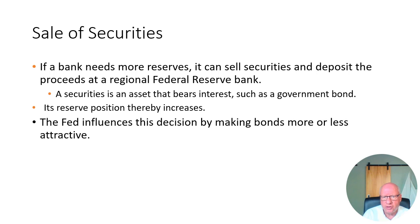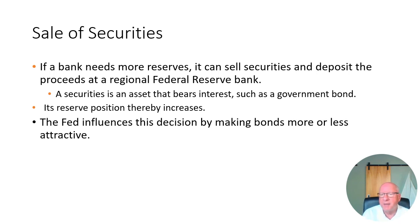Banks maintain liquidity by holding a large portfolio of securities. If a bank is running short of reserves because it made too many loans but has several million dollars in securities, it can simply sell the securities, get the cash, and put the cash in the vault — and all of a sudden it's perfectly legal again because it now has all the required reserves. So the Federal Reserve can influence banks' decisions on whether to make loans by manipulating interest rates in the bond market.